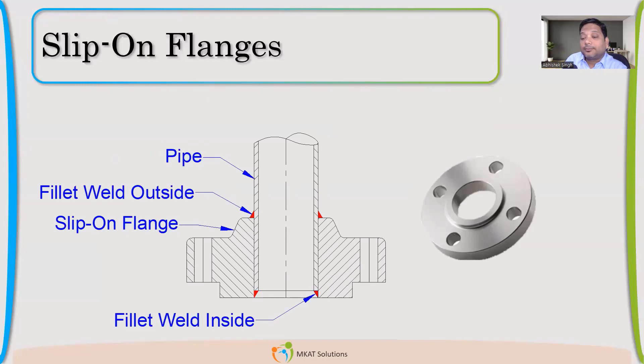Slip-on. Slip-on can be a ring type without any hub or it can have a hub also. If we are using a ring type flange, these are very cost effective. So for low pressure, we'll always go with slip-on.